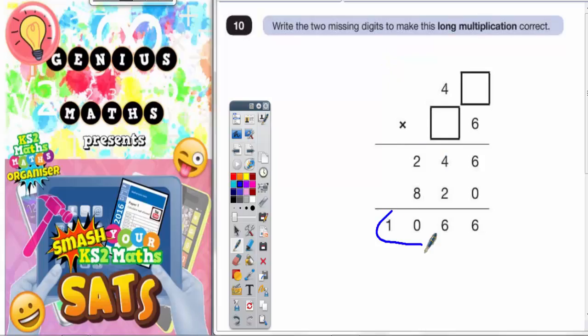Now normally you're used to finding the very final answer at the end of the long multiplication, which in this case would be 1066. But that final answer has actually been given to you. You've got to work in reverse to figure out what digits were in the question.